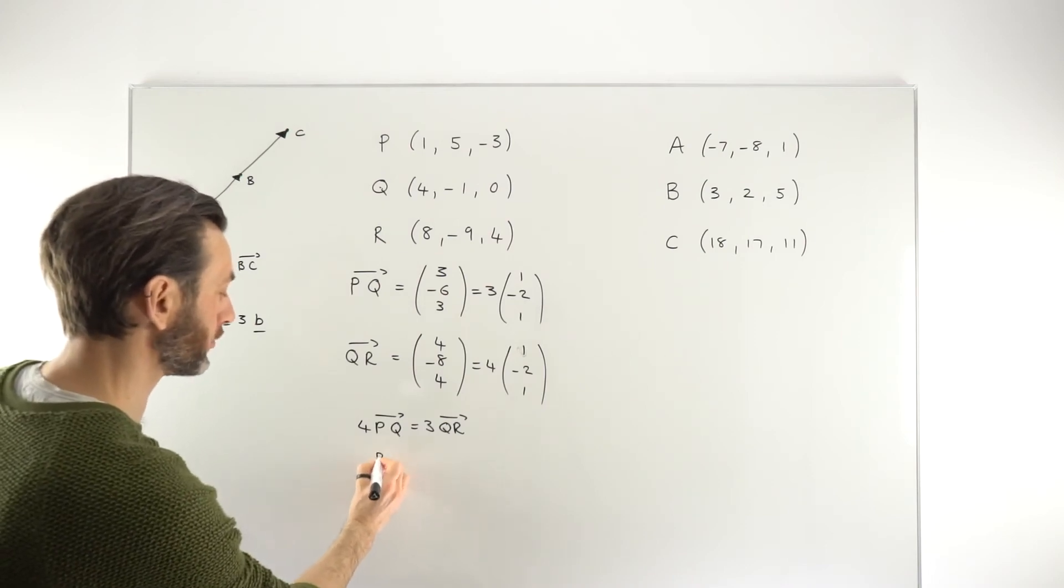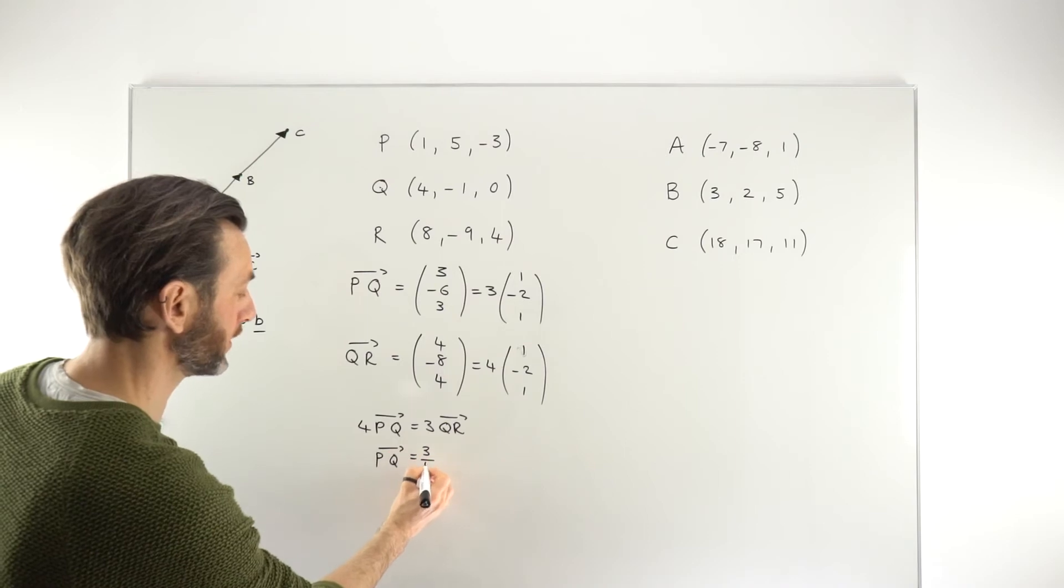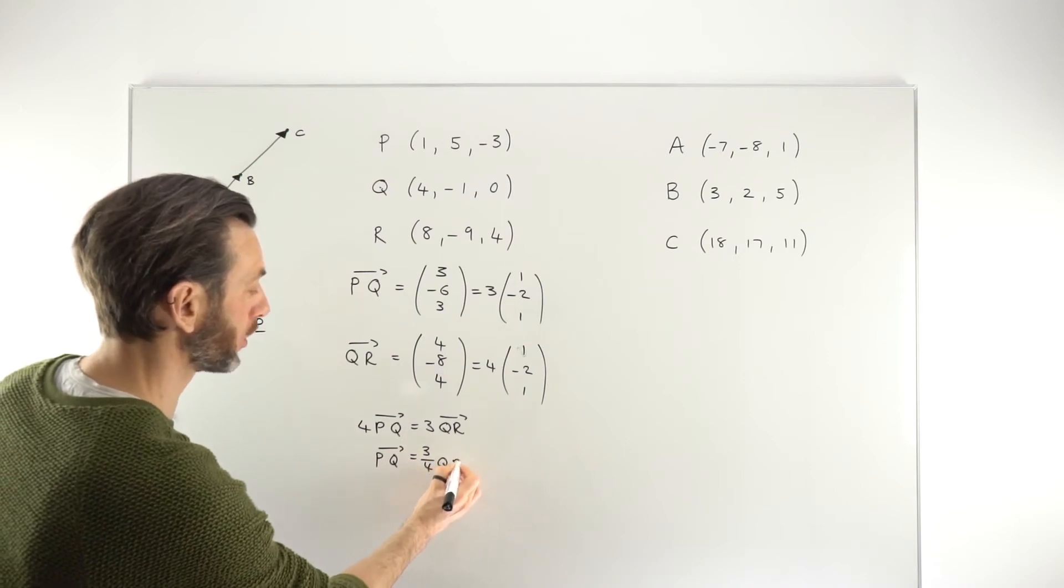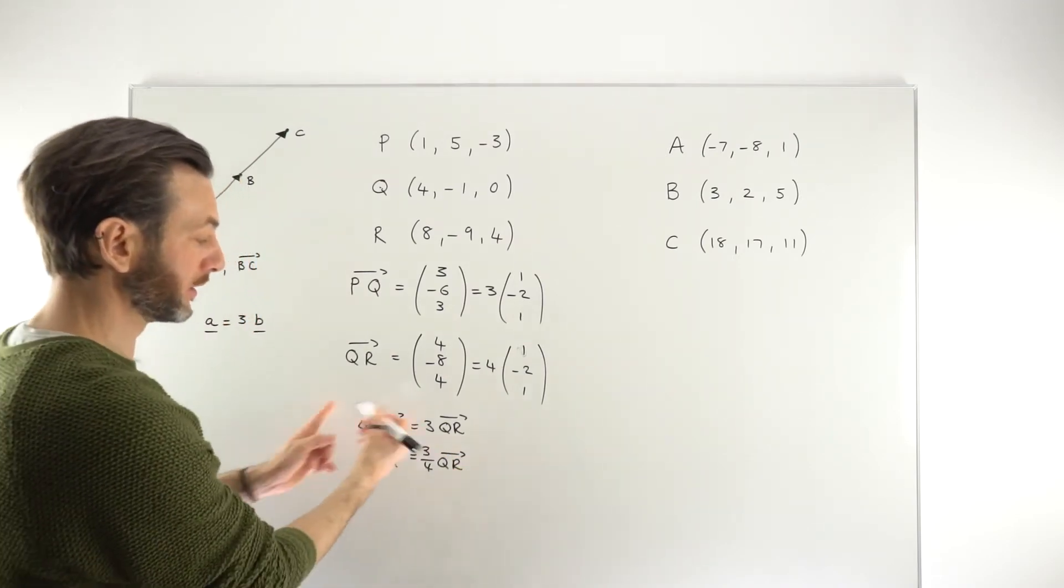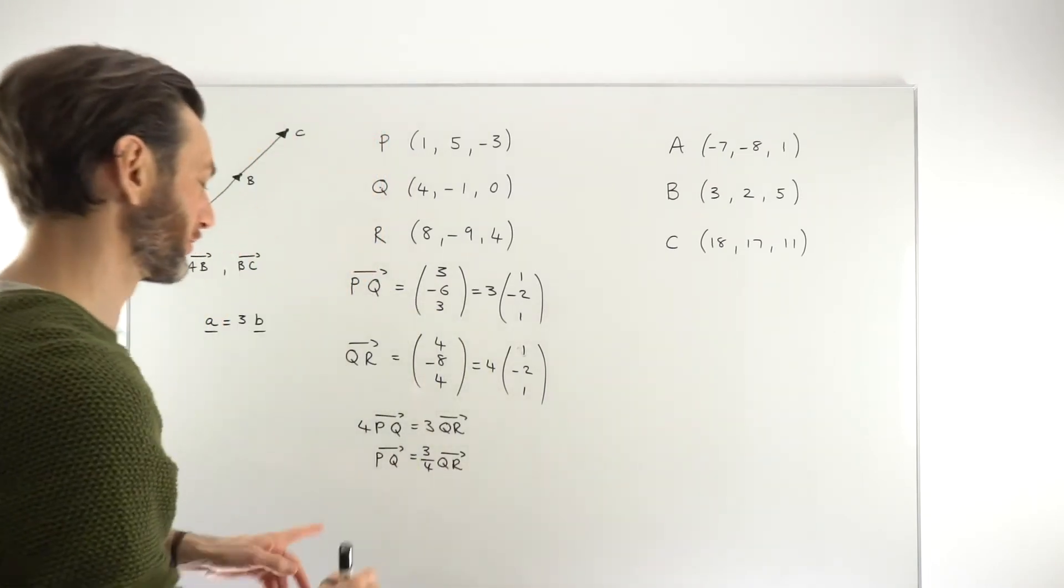There's different ways to write it. You might prefer to write it as PQ equals 3 over 4 QR. Or you could do it the other way around. You could divide the 3 over. All of these options are good enough to show that those two vectors are parallel.